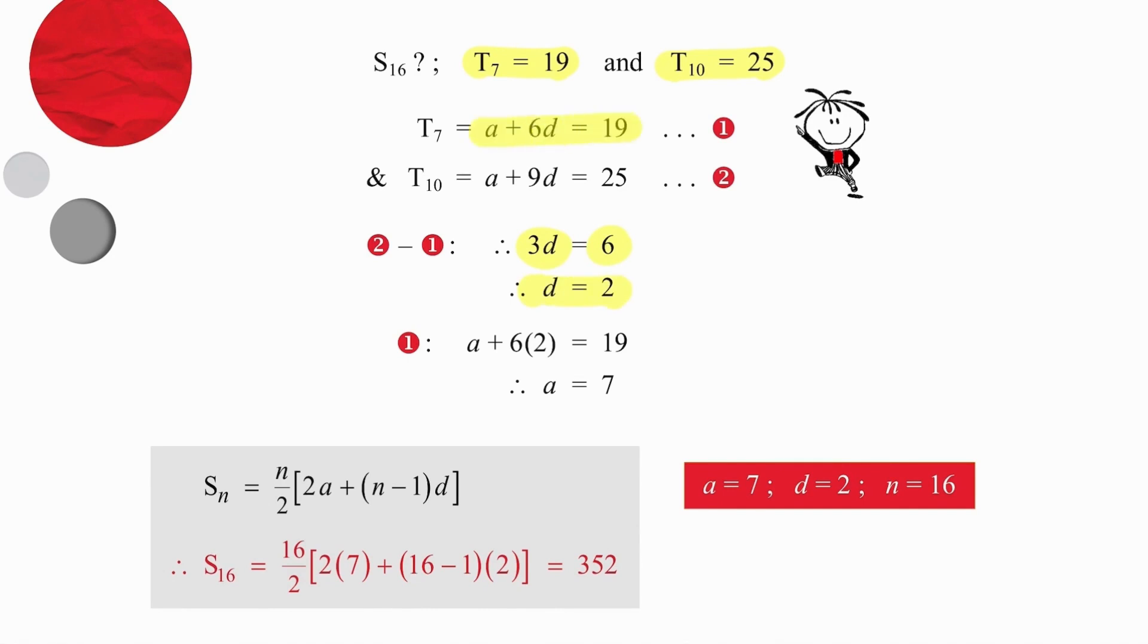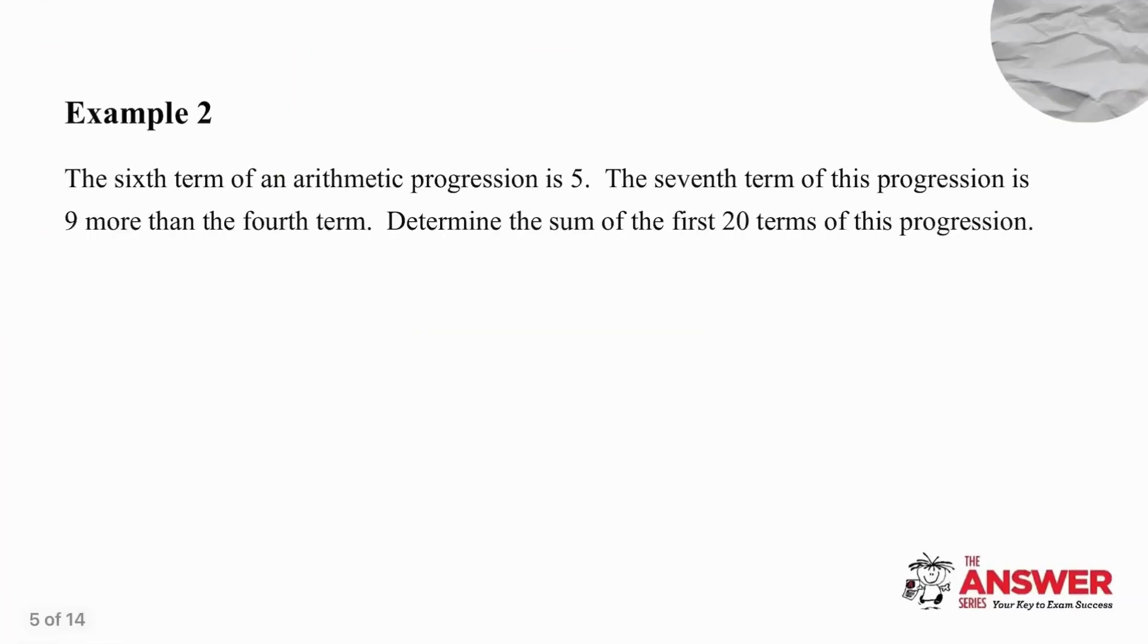Take the 2 back to the 7th term which you worked out at the start, substitute 2 in, and work out that A is equal to 7. Now you have both A and D. You can substitute the A value, the N value, and the D value into the sum formula, and work out that the answer is 352. Pause the video and work through this in your own time, if you need another look.